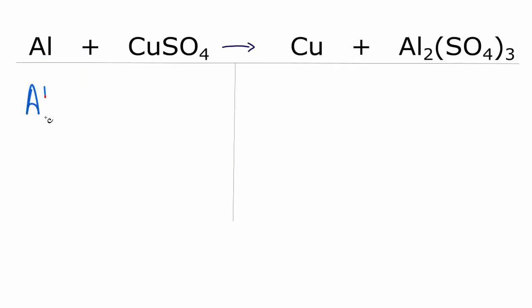We have one aluminum atom, and then we have one copper atom on the reactant side. What I like to do is this SO4, since I have an SO4 here, and then I have SO4 here, I'm going to treat that as one item. So SO4, and I have one of those right here.